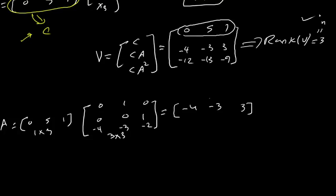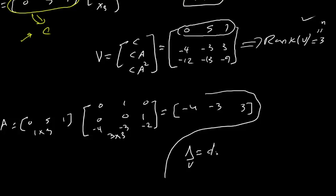Since V is a square matrix, we can also use the determinant. The determinant of V equals −344, which is not equal to zero, so the system is observable. If the determinant of V were equal to zero, the system would not be observable.